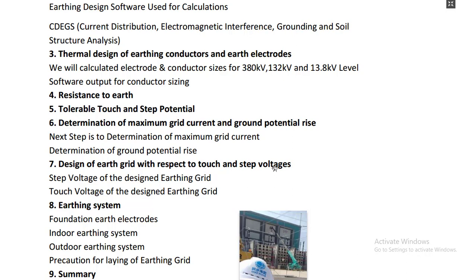These calculations are relatively straightforward. For earth resistance, we calculate it based on the data collected: the soil resistivity results taken at different points, which are entered into the software along with the fault level. We then calculate the step and touch potential to ensure they are within the limits of the provided specifications, and at the end we get an earth resistance value that will be within the required limits.